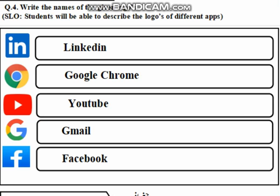Question number 4: Write the names of the given logos. We use different logos. First, the logo of LinkedIn — it is an online job website. Next is Google Chrome. After that, the logos of YouTube and Gmail.